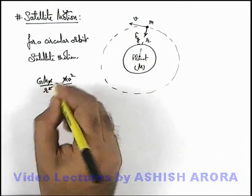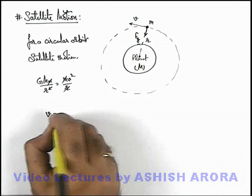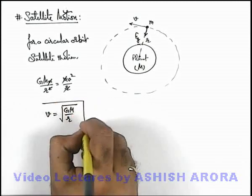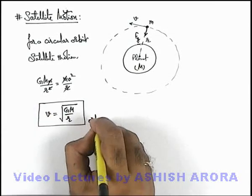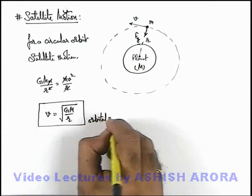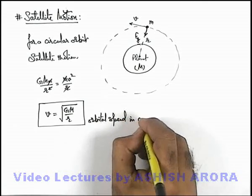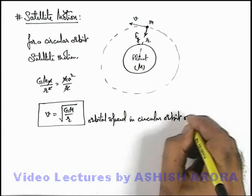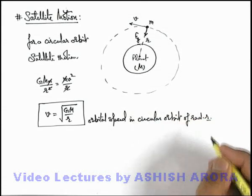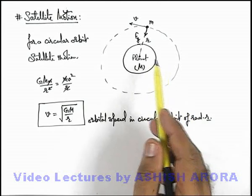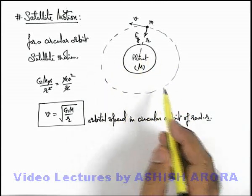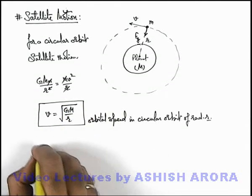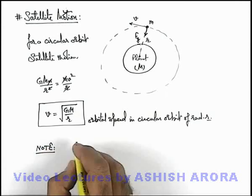Here this r and m gets cancelled out and the speed of the satellite can be written as root of G M by r, which is the most simple and standard relation of orbital speed in circular orbit of radius r. Whenever a body is to revolve round a circular orbit of radius r in the surrounding of a planet, its velocity should be given as root of G M by r. You can also note in this expression that...